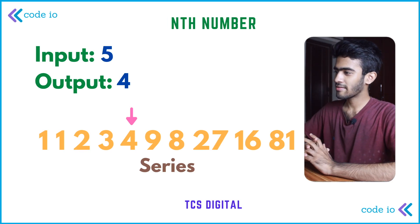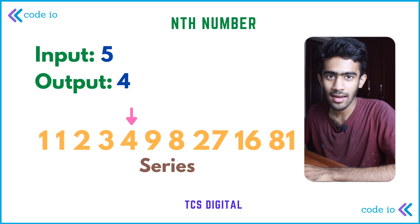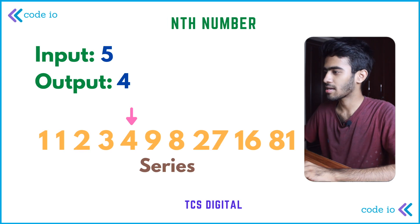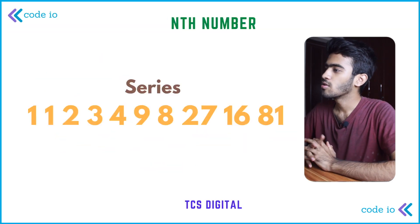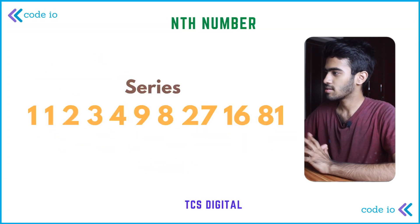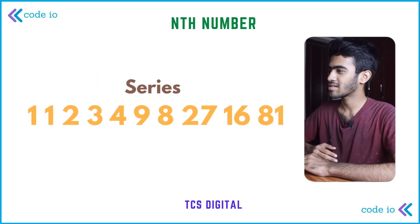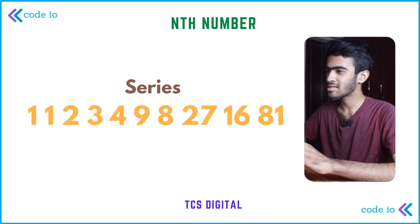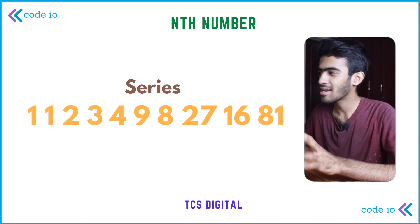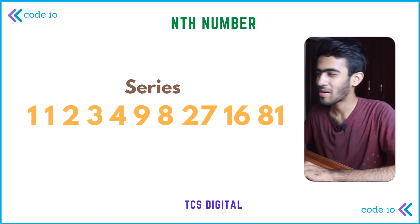So we will look at the series and find what pattern is in it. The series is: 1, 1, 2, 3, 4, 9, 8, 27, 16, 81. So this is the pattern.